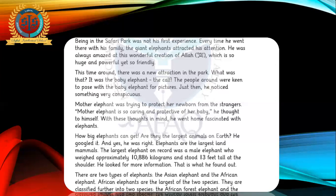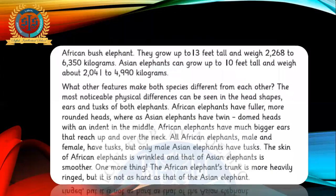African elephants are of two types: forest elephants and bush elephants. African elephants grow 13 feet tall and weigh 2,268 to 6,350 kilograms. Asian elephants are 10 feet tall and weigh 2,041 to 4,990 kilograms. In the next paragraph, he explains all about the differences between Asian and African elephants in their shape, size and body shape. We will discuss this part in detail afterwards.